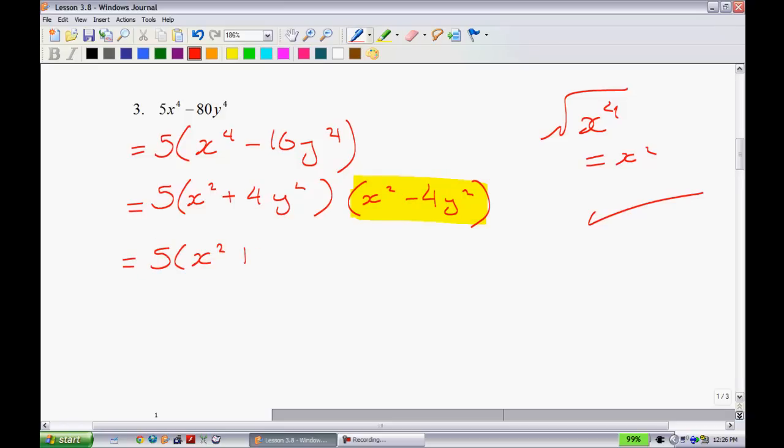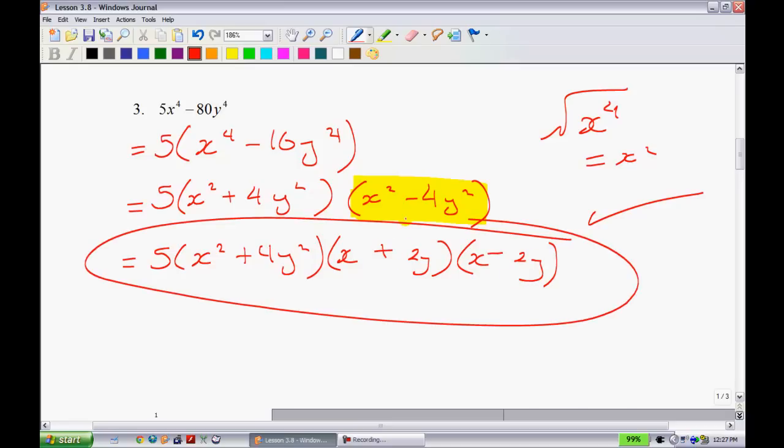The reason I can't simplify this first one is simply because there is a positive right there, and so it doesn't fall into the difference of squares. There's no sum of squares. So this one I'm going to factor further, because I can take the square root of x², which is x, the square root of 4y², which is 2y and 2y, make one of them positive, make one of them negative, and that would be your final solution.